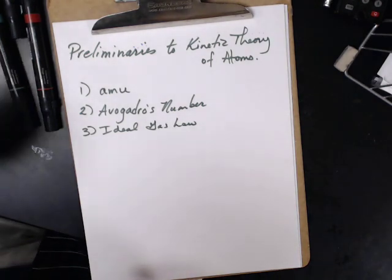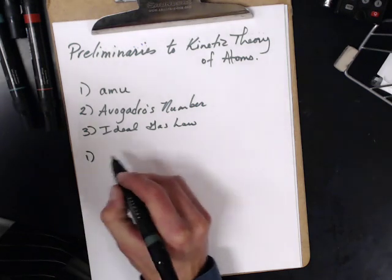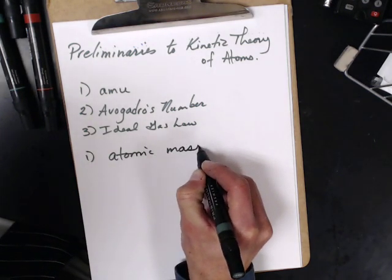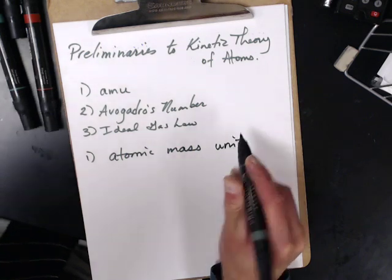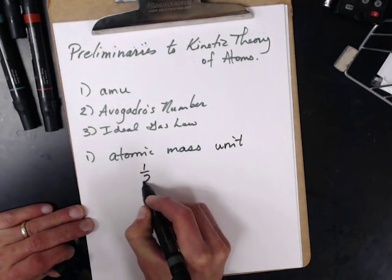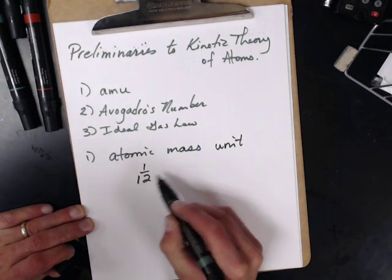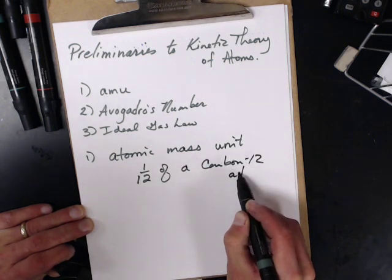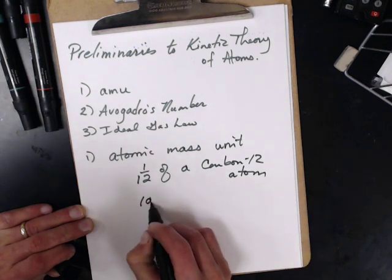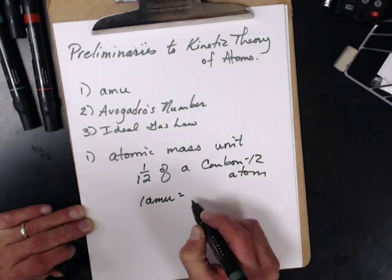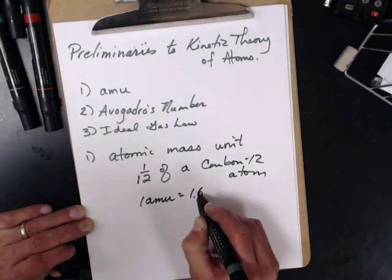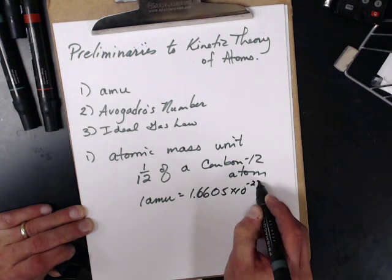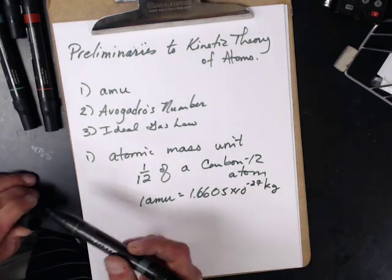It's a very nice place to start. The AMU is the atomic mass unit. So, this is 1 twelfth of a carbon-12 atom. And 1 AMU is equal to 1.605 times 10 to the minus 27 kilograms. It's very, very small.